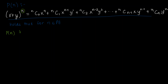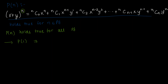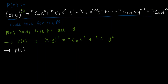To prove that P(n) holds true for all natural numbers, we need to do two things. First, we need to prove that P(1) holds true — that is, (x + y) to the power of 1 equals 1C0 · x^1 + 1C1 · y^1. Second, we need to prove that given P(i) holds true for any natural number i, that implies P(i+1) also holds true.